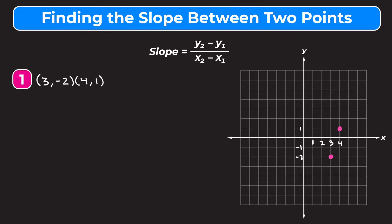The slope is equal to rise over run, which tells us how steep a line is. When finding the slope we want to see how far up or down we go to get from one point to the next. Going from the bottom point to the top, we go 1, 2, 3 up — that's a positive 3 for our rise. Then we see how far left or right we go, and we go 1 to the right.